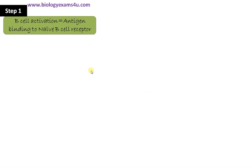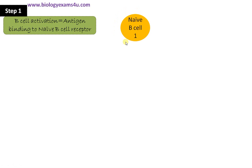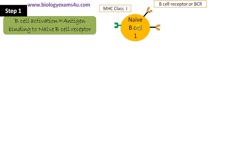Step one is B cell activation. A naive B cell is a B cell that hasn't encountered an antigen before. It has a B cell receptor with high specificity for a particular pathogen or an epitope of a pathogen. A B cell also has MHC class 1 receptors, as it is a nucleated cell, and MHC class 2 receptors, as it is an antigen presenting cell.